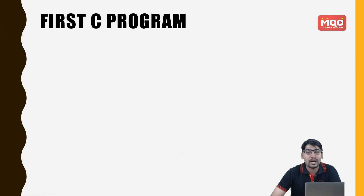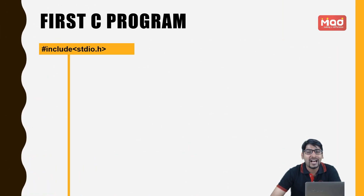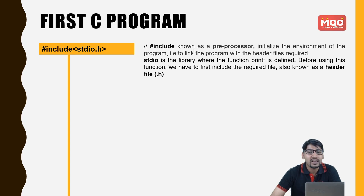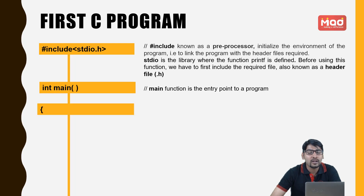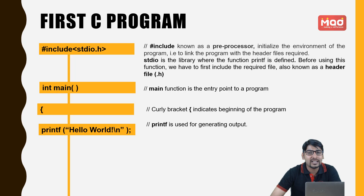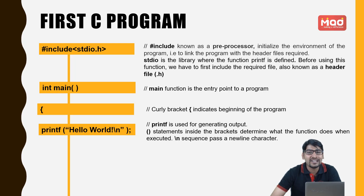Now let us revise the C program. First comes #include stdio.h, which will include the header file. Then comes the main function, which is the beginning of the program, and the curly bracket to begin the program. Then comes the printf function, which will put output on the screen. The statements inside the bracket will be printed as they are.